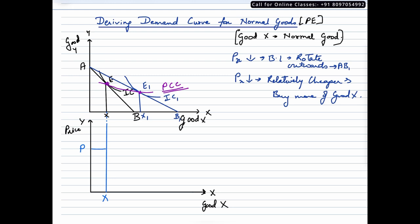assume? We assumed that the price for commodity X is falling, and because of that, the consumer increased his consumption to OX1. Let us bring down the quantity OX1 in our lower panel, so I'm just going to put some dots here.